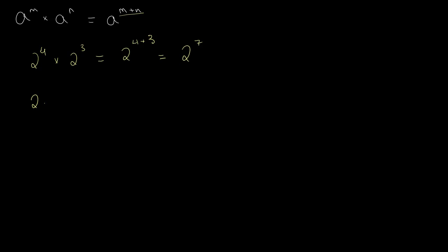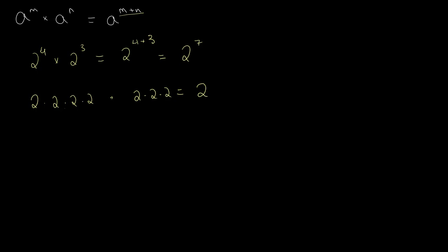We can easily see how this works when we expand. Two to the four is two times two times two times two, or two times itself four times. Multiply this by two to the third, which is two times itself three times. If we remove the brackets, we are just multiplying two by itself seven times, so this is equal to two to the seventh power.